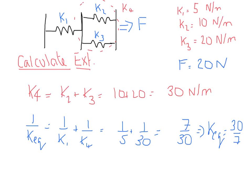So if we want to calculate what our extension is, so our e, if F equals KE, so e must equal F over K, which is equal to 20 divided by 30 over 7, which is going to be 140 divided by 30, which is equal to around 4.7 meters.